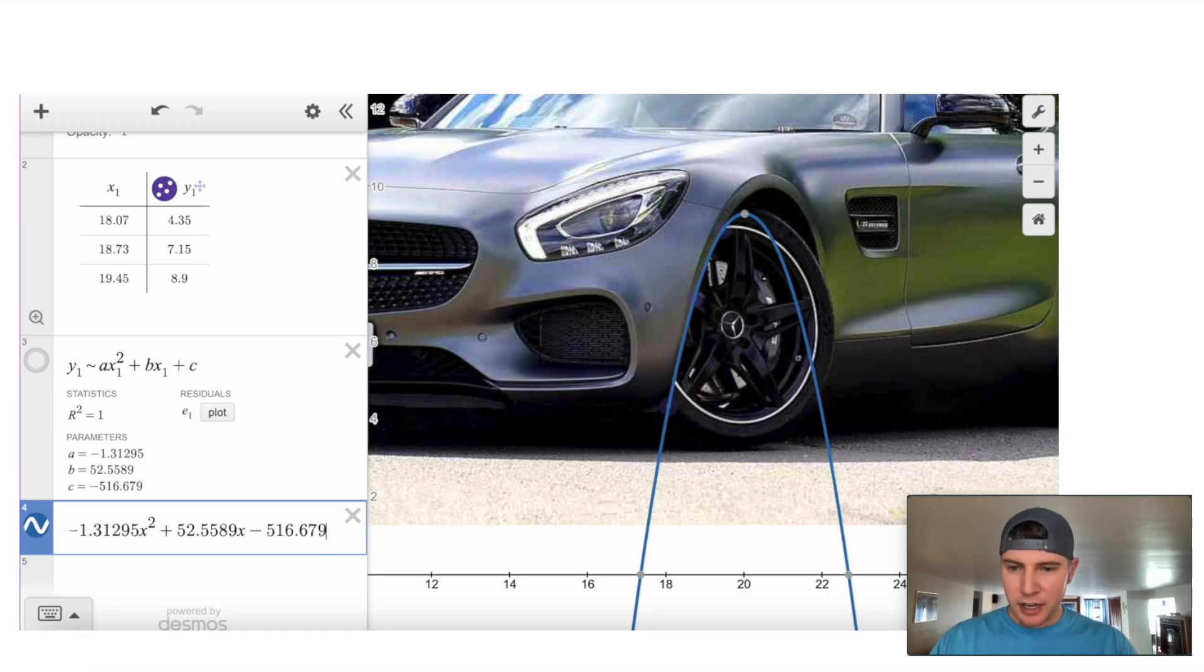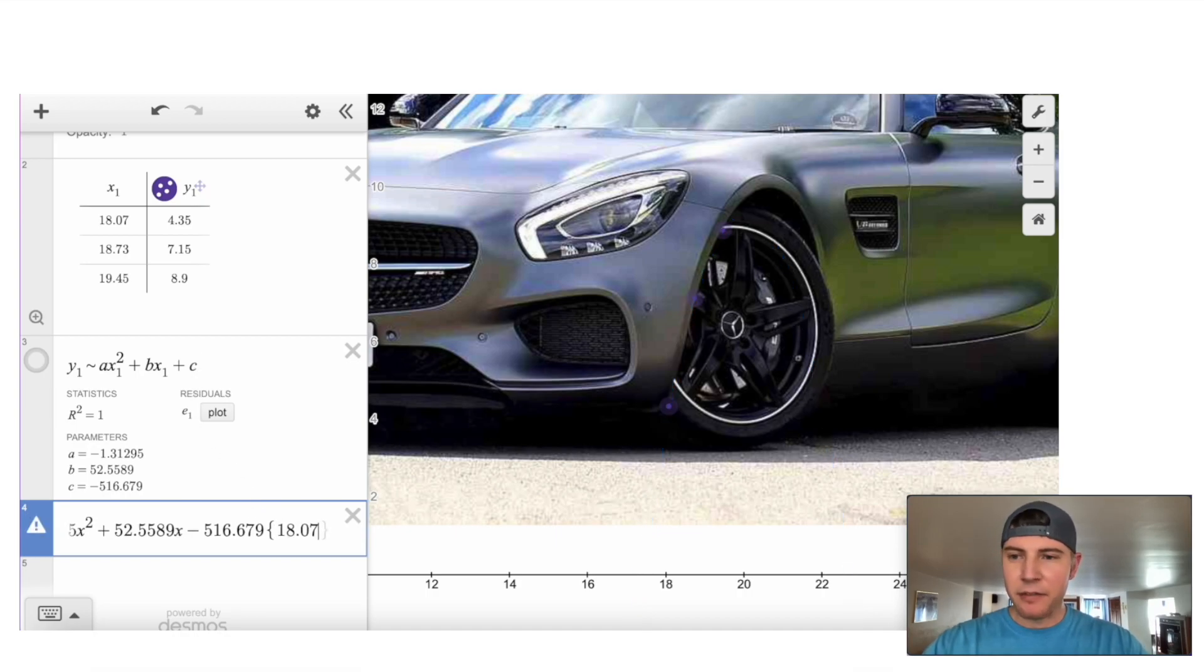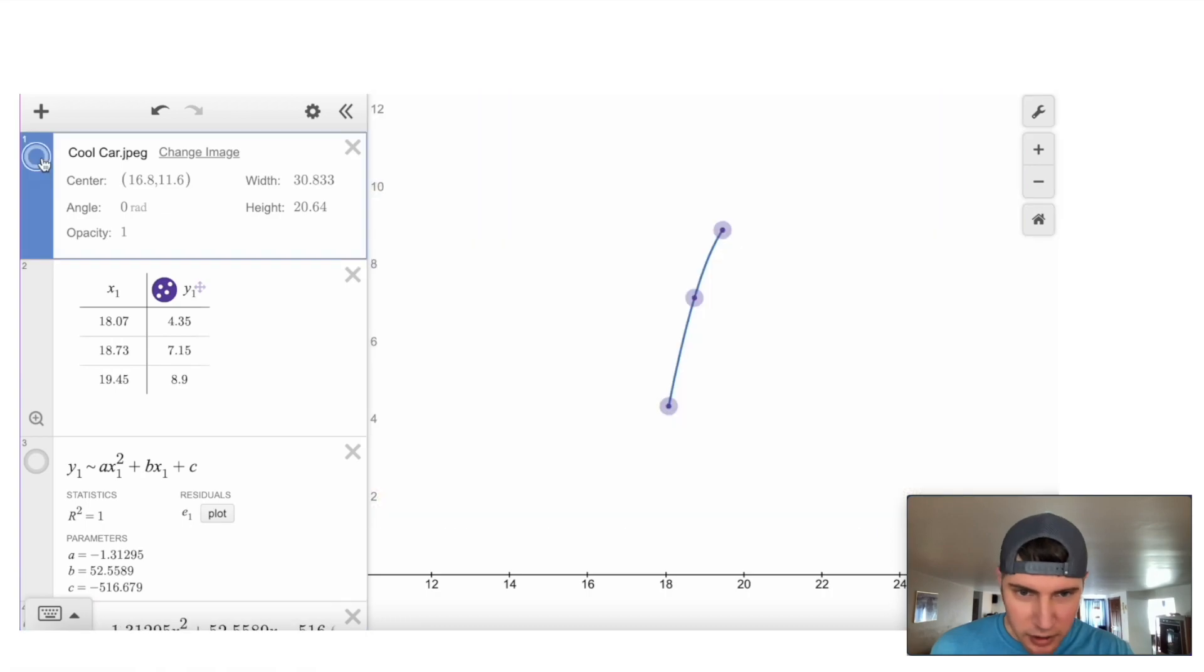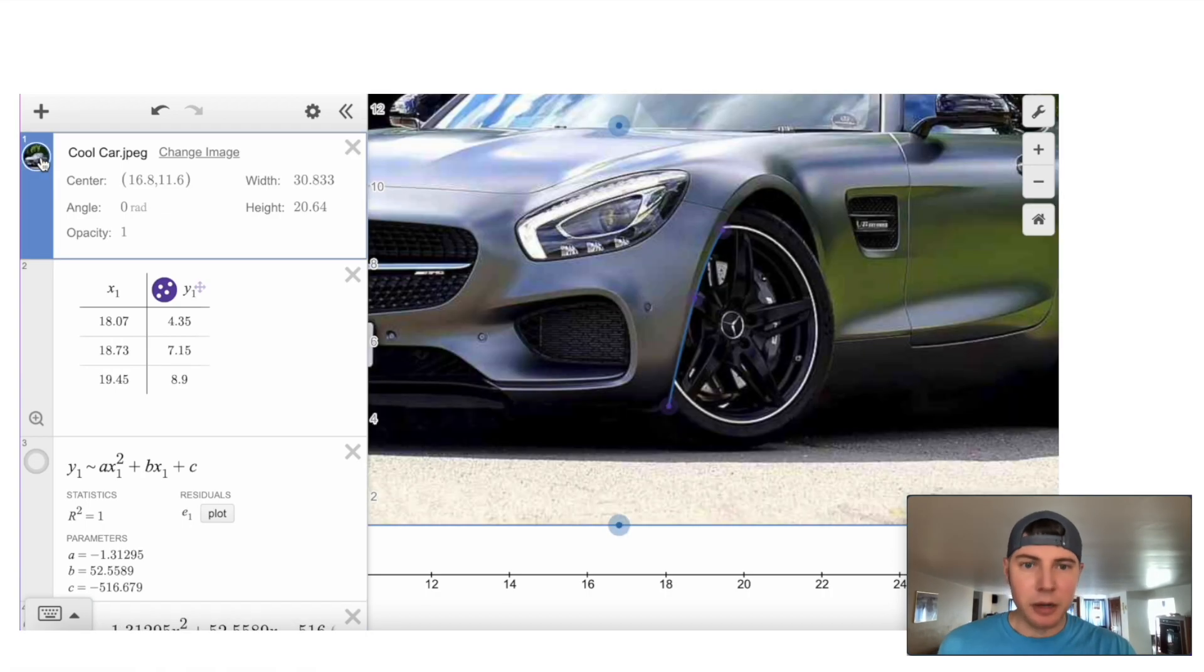So go over here, go to the end of the equation. We'll do a squiggly bracket and we're going to go from the 18.07, less than or equal to x, less than or equal to this 19.45. And now that looks pretty good. We can even turn it off and look. So we're getting that part of the wheel well pretty good.